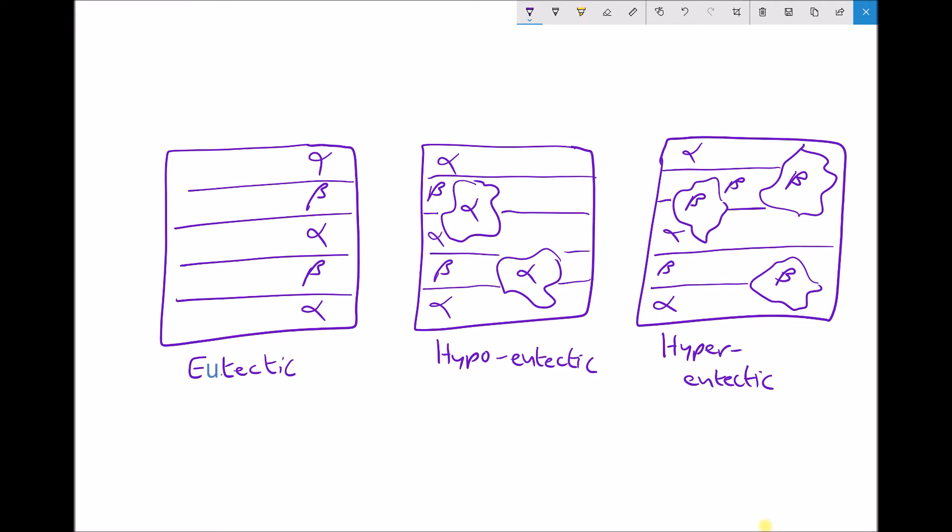Now the important thing here is, the alloy that we were referring to there was an alloy of tin and lead. And what we notice, if we analyse the shear strength in relation to composition for that particular alloy,